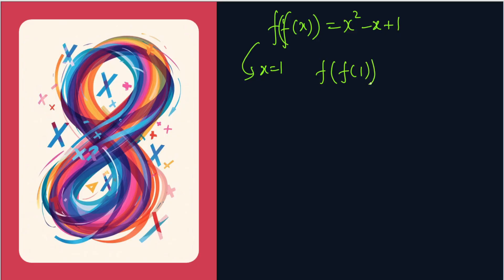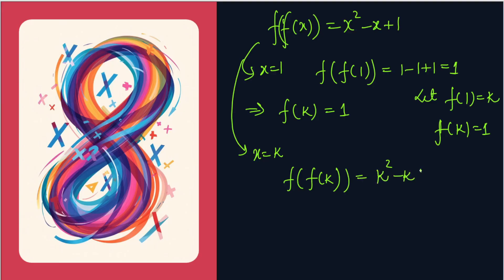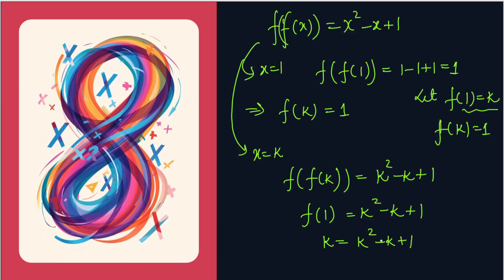Putting x = 1: 1 - 1 + 1 = 1, so F(F(1)) = 1. Let F(1) = K. Similarly, F(K) = 1. Now put x = K: F(F(K)) = K² - K + 1. Since F(K) = 1, we get F(1) = K² - K + 1. But F(1) = K, so K² - K + 1 = K.